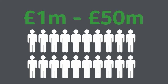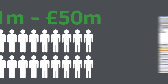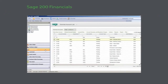It can handle millions of transactions simultaneously in multiple currencies without impacting on speed of execution. It uses a three-tier nominal ledger accounting structure, reporting on input codes, departments and cost centres as standard.